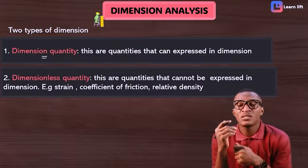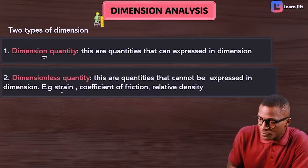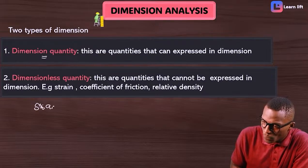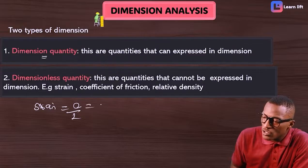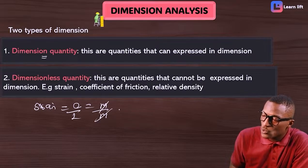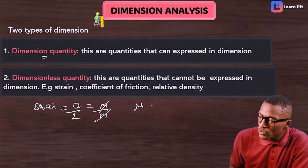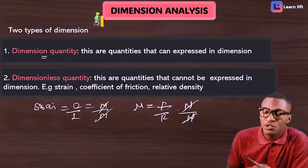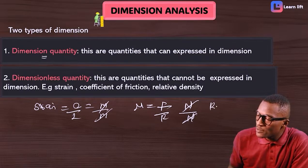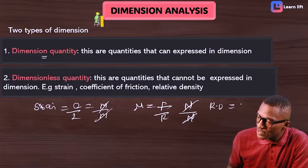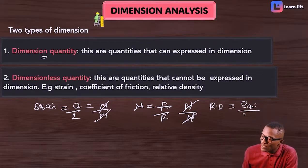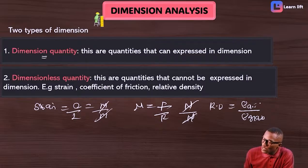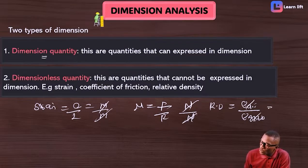A dimensionless quantity is one that cannot be expressed in dimension, for example, strain. Strain is equal to extension over length — extension is in meters, length is in meters, so meters cancel meters, giving no units. Coefficient of friction μ is force over reaction: newtons cancel newtons, no units. Relative density is density in one medium over density in another — both dimensions cancel, making it dimensionless.